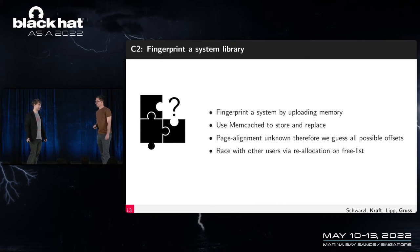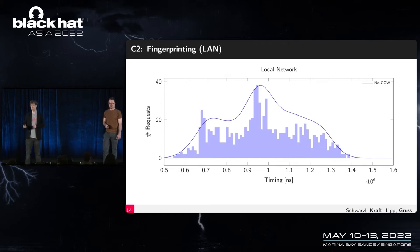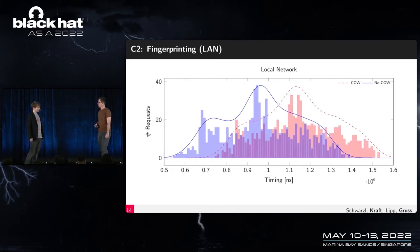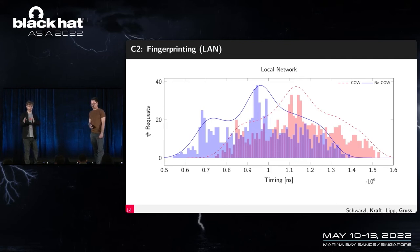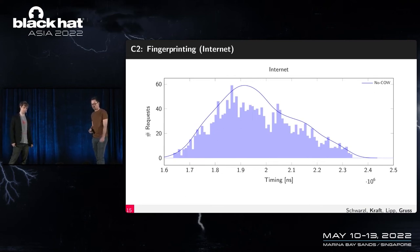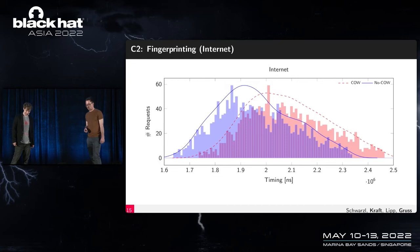Looking at fingerprinting results: a timing histogram for the non-copy-on-write case — where the attacker didn't guess correctly — is clearly distinguishable from the copy-on-write case, where the attacker found a matching page. Over the internet, you need more requests and the timing is larger, and there's more noise, but you can still distinguish the two cases — it's still possible.